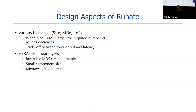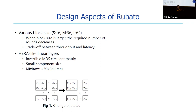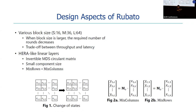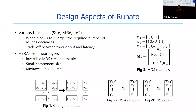We adopt HERA-like linear layers composed of mixed columns and mixed rows. V-squared states of X become V-squared states of Y via mixed columns and mixed rows. Mixed columns multiply a fixed MDS matrix to the state column-wise, and mixed rows multiply the same matrix row-wise. The MDS matrix is defined for block size 16 in HERA, so we brute-force found small V-by-V MDS matrices with a circulant structure for block sizes 36 and 64.